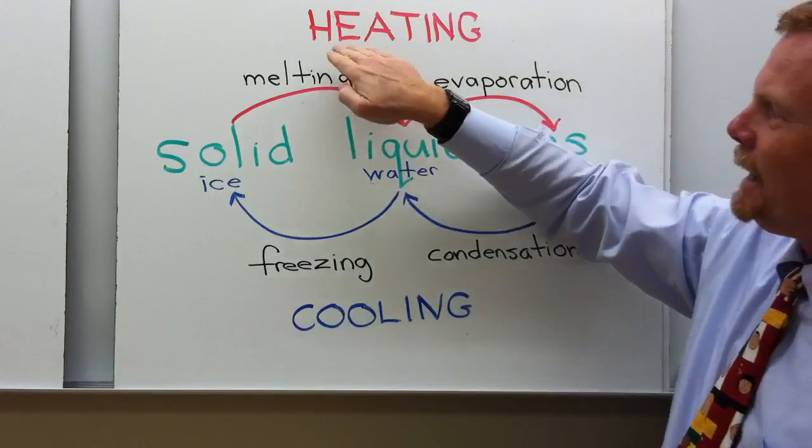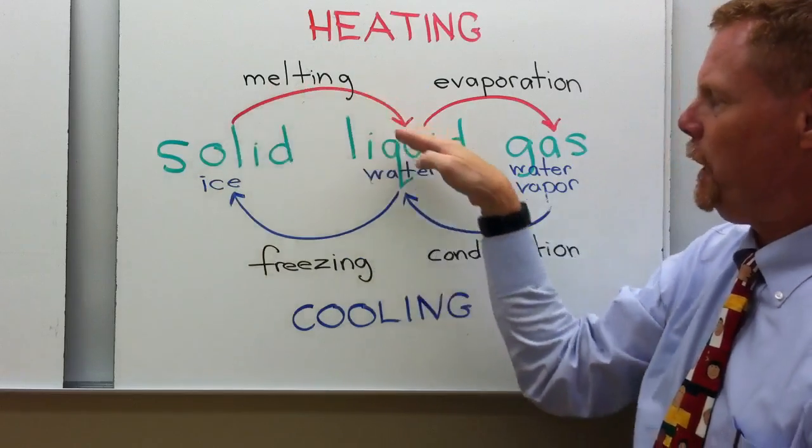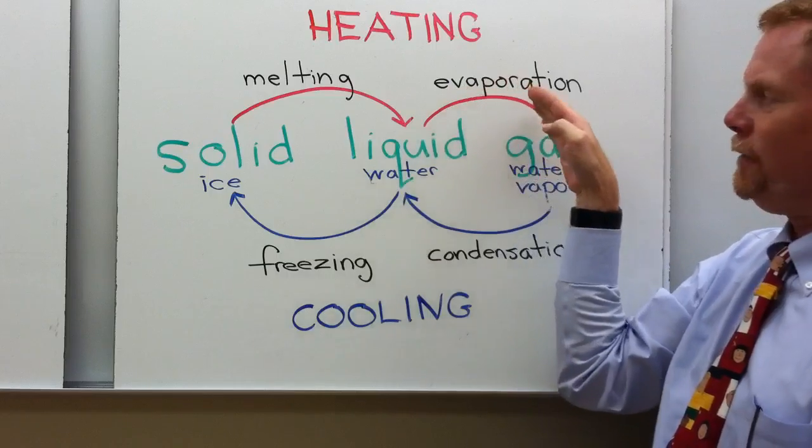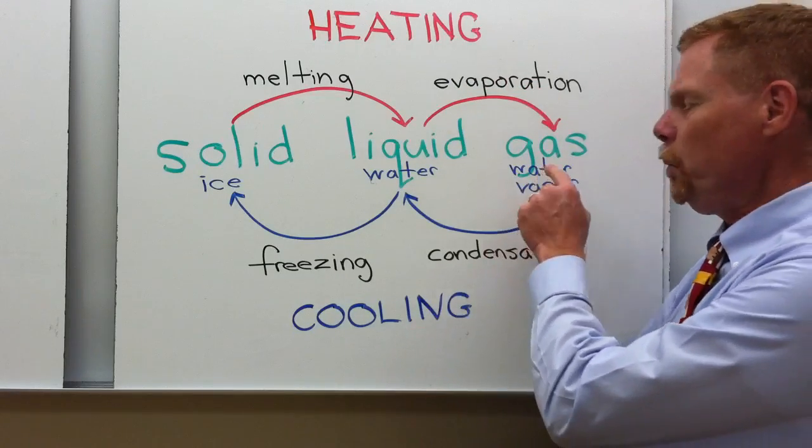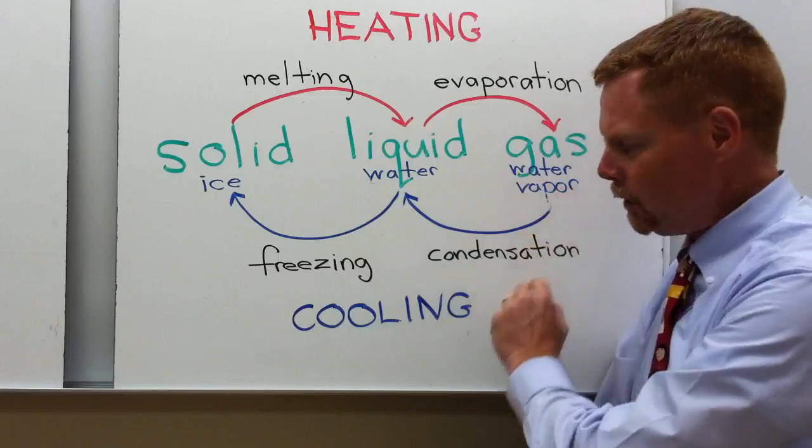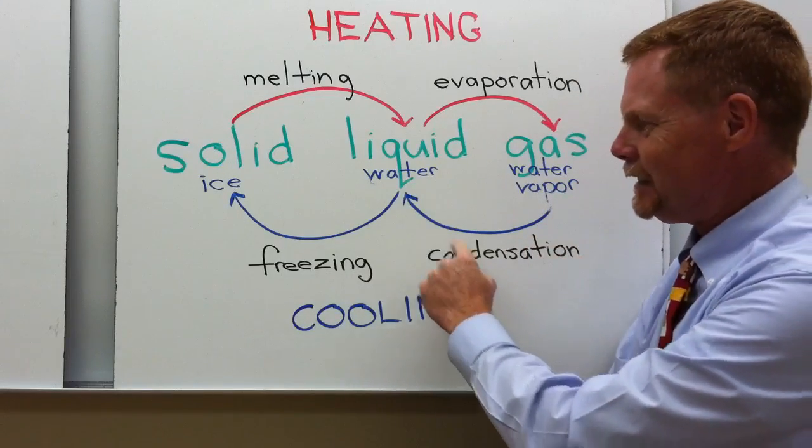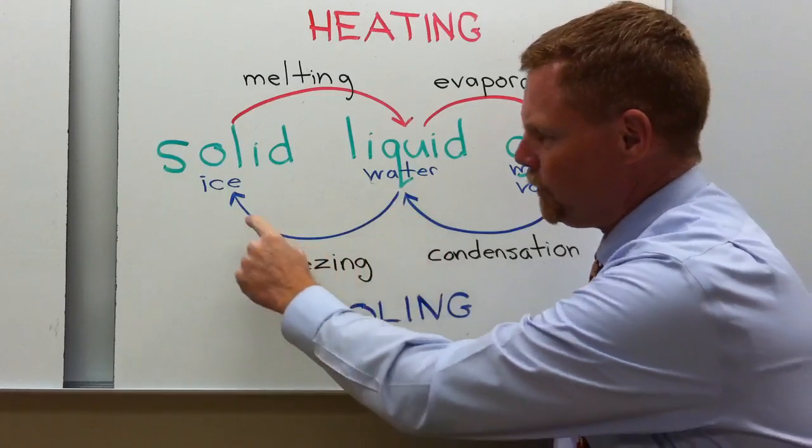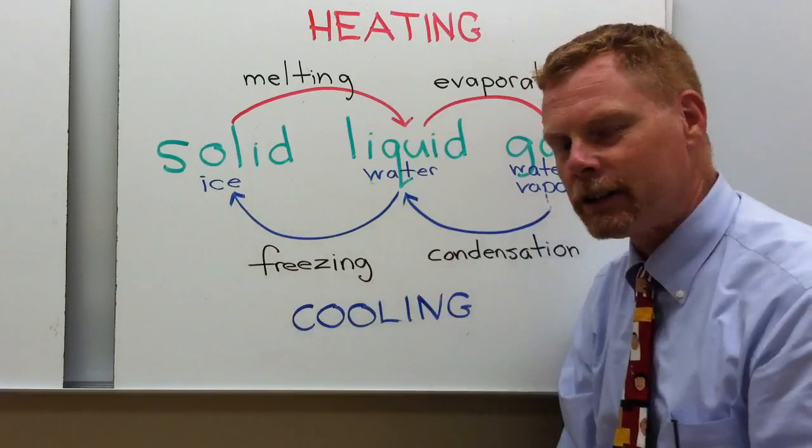Whenever I heat it, whenever I add heat to water, if it's a solid, it's going to melt and become a liquid. When I add more heat to it, it evaporates and becomes a gas, water vapor. When I have water vapor and I cool it, it's going to condense and become liquid water. If I cool that liquid water further, it's going to freeze and return to its solid state as ice.